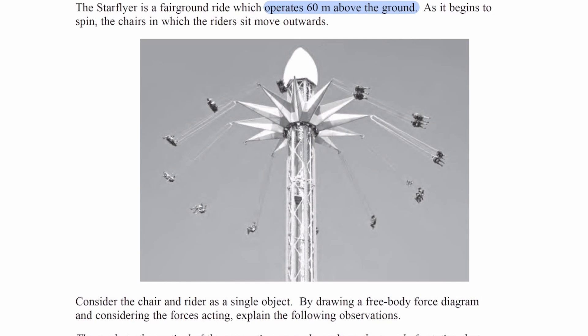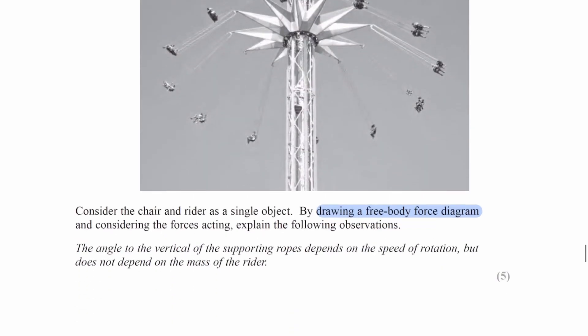Consider the chair and the rider as a single object. By drawing a free-body force diagram and considering the forces acting, explain the following observations. The angle to the vertical of the supporting ropes depends on the speed of rotation, but does not depend on the mass of the rider.